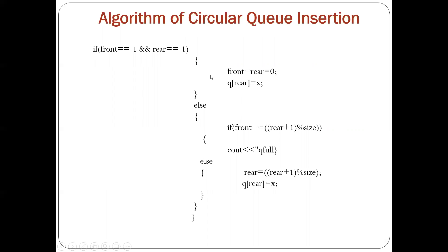Now this is the insertion algorithm. While inserting, we test if front and rear both are at minus 1 — that means the queue is initially empty — then front is equal to rear is equal to 0 and q[rear] is equal to x, inserting the element at the rear position. Else if front equals (rear plus 1) mod size, then the queue is full. Otherwise, if the queue is not full and not empty, we increment rear as rear equals (rear plus 1) mod size, then q[rear] equals x. This modular incrementation is very important because whenever the rear is at the last position it resets to 0.